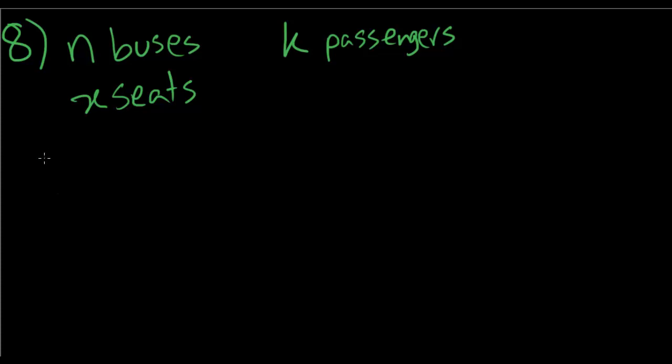So let's think about this. They have n buses and k number of passengers, and each bus has x seats. Now each bus was filled up except for one which had three seats empty. So n minus one is the number of buses that were completely full. That one bus had three empty seats.